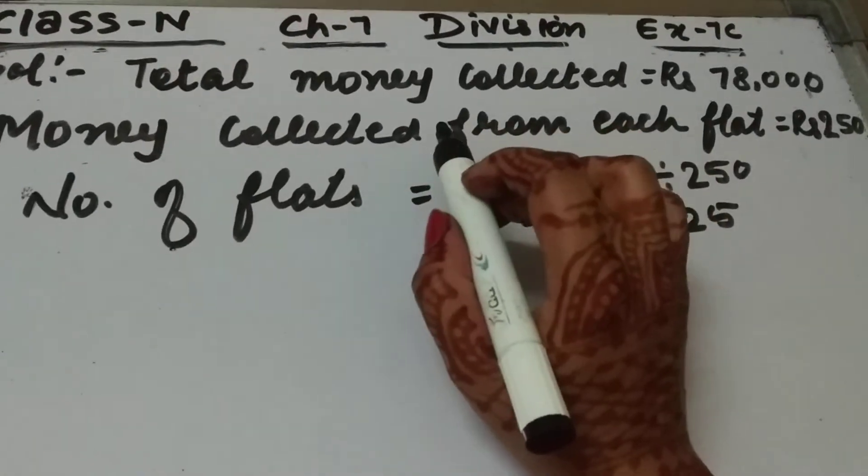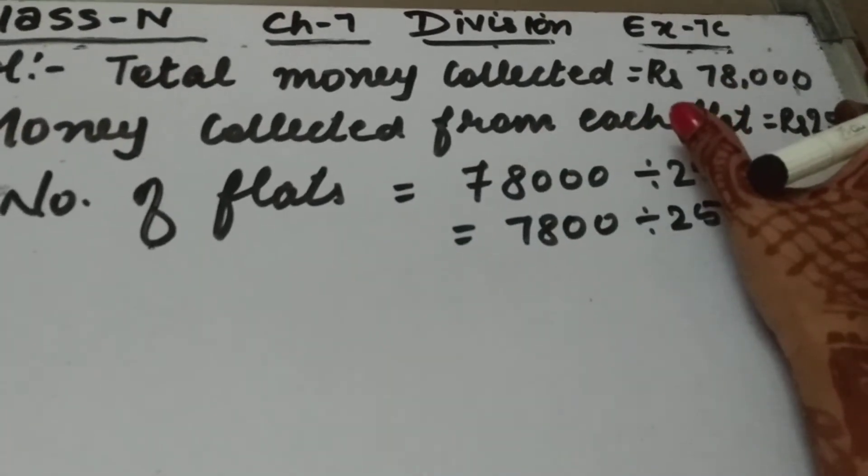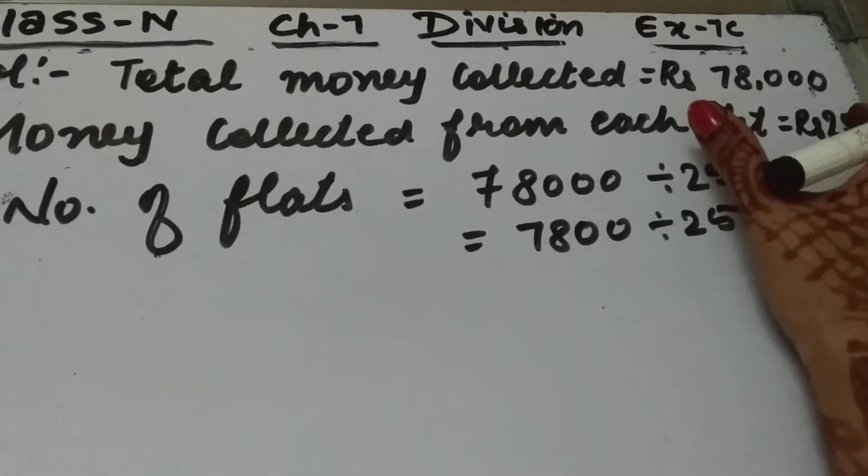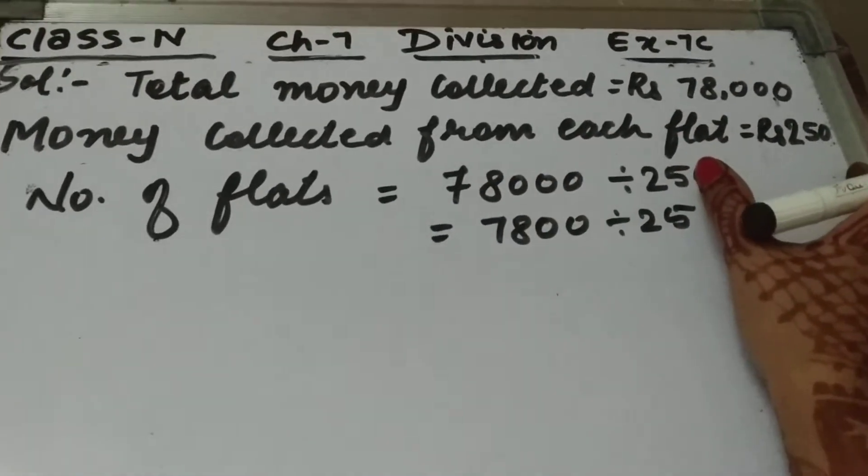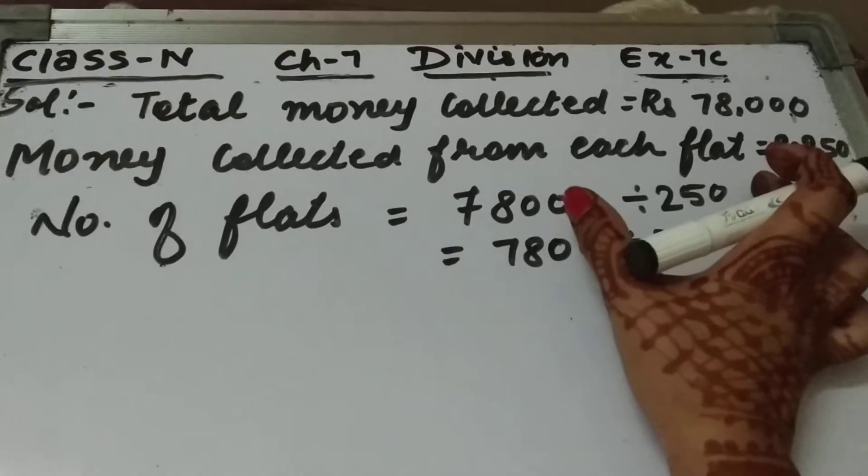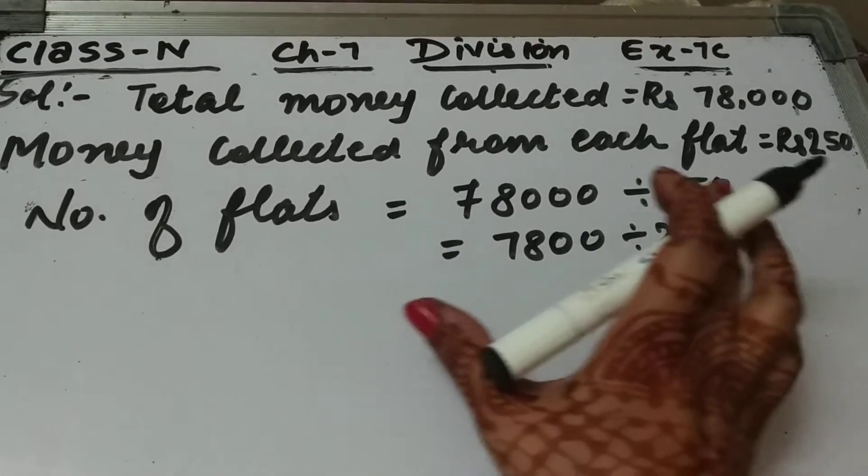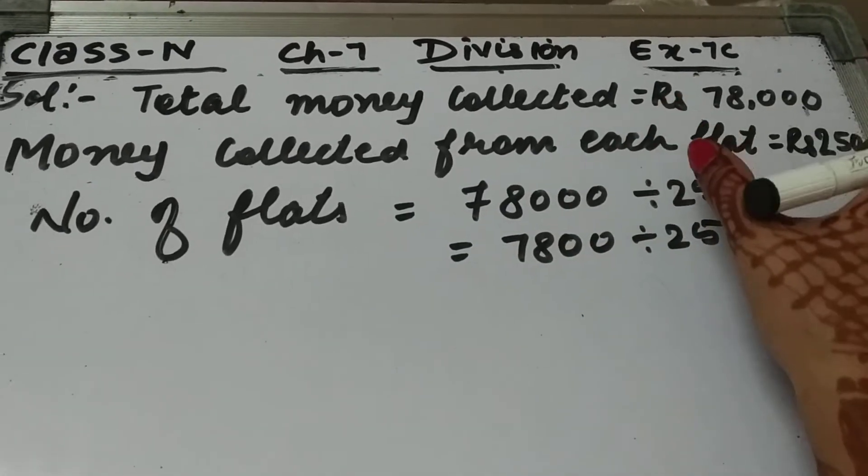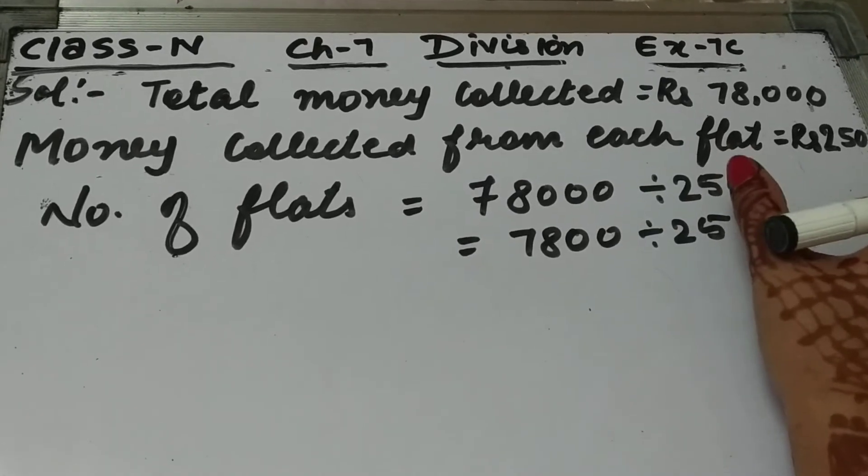The total money collected is rupees 78,000. So you will write total money collected is equal to rupees 78,000 and money collected from each flat is rupees 250. Now we have to find number of flats and number of flats is equal to you will divide the total money by the money collected from each flat.